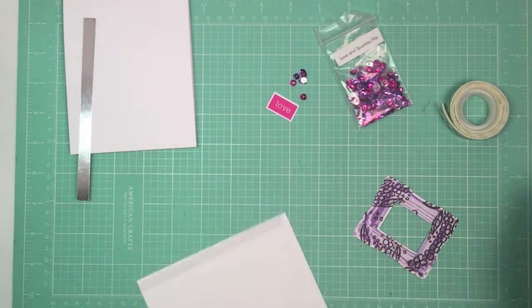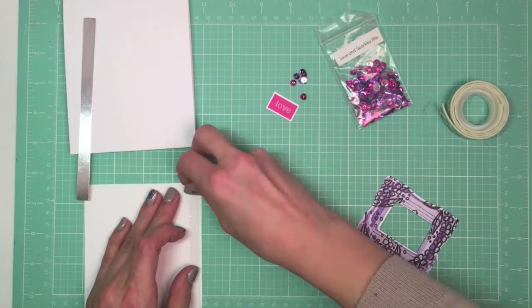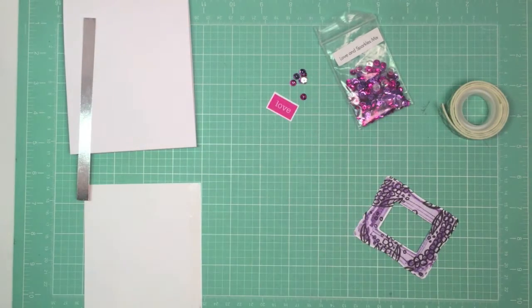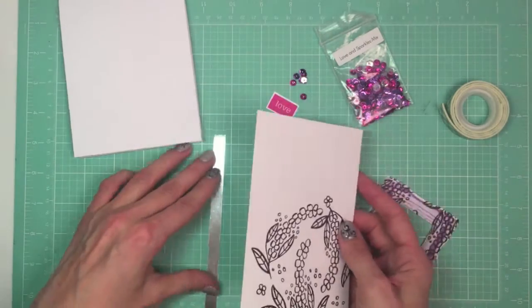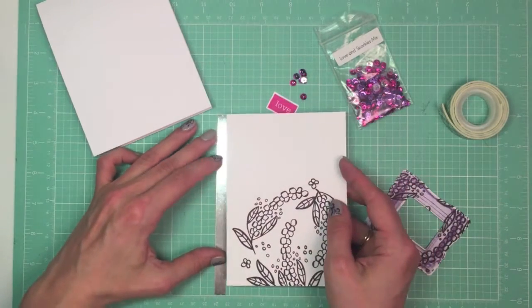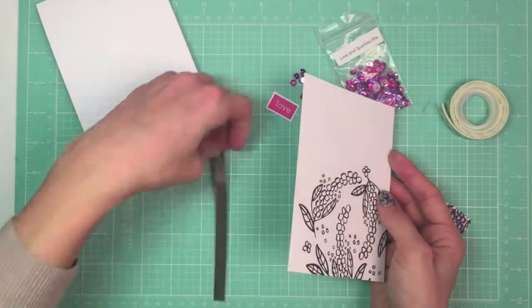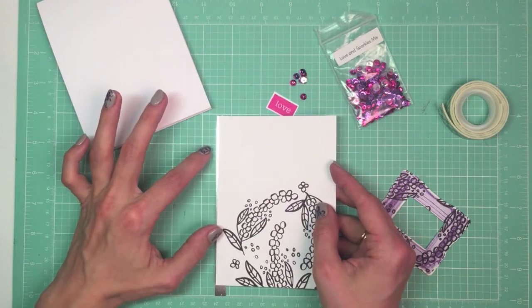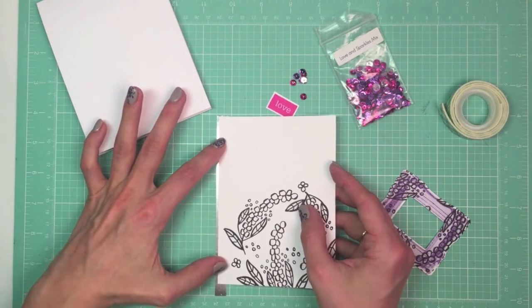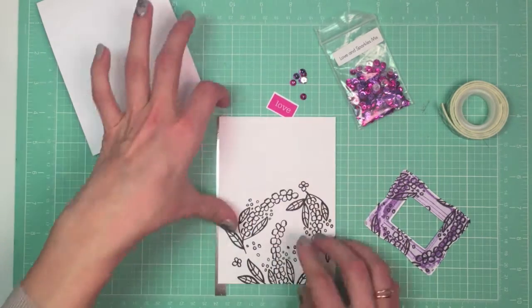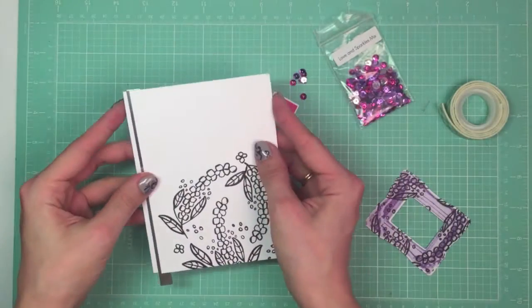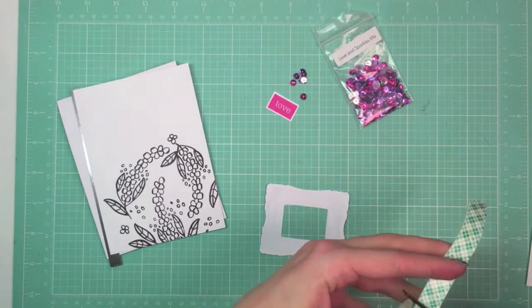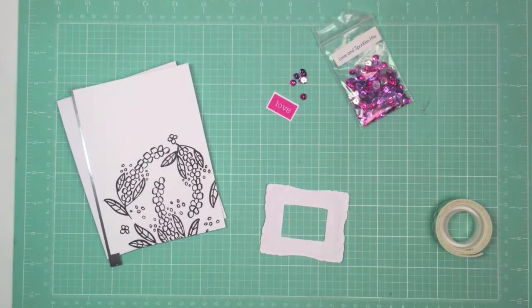Now I'm adhering it with the help of double-sided tape, and I'm going to use the lines on my mat to align it straight and perfectly on my front panel. I've decided to pop up my frame over the front panel, and I'm going to do it with the help of foam tape. Actually, while I was cutting it to smaller parts so it fits behind the frame, I was thinking that these little frames would be so perfect to make little shakers.